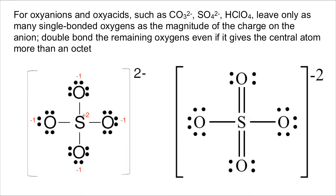When you have an oxyanion where the central atom is allowed to have more than an octet, what you want to do is look at the charge of the anion. So this is a sulfate anion, drawn two different ways. On the left, we have a charge of two minus on the outside. This is shown where all of the atoms, including the sulfur in the middle, have an octet. And so you might think that this is the best structure. But what's shown here — these little red numbers — these are called formal charges. And what you need to know for now is that the formal charges should be as close to zero as possible. And in this structure, none of the formal charges are zero.